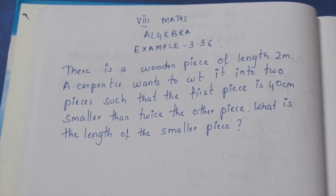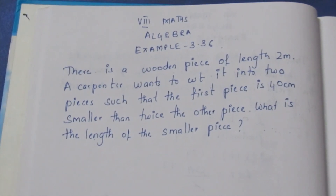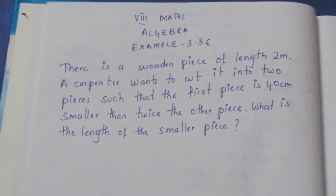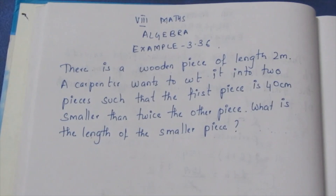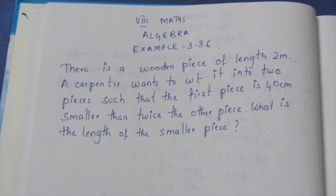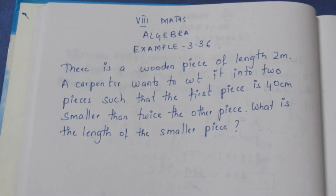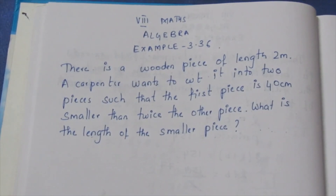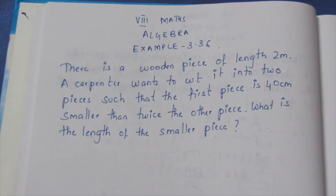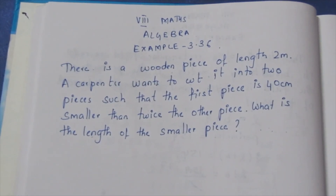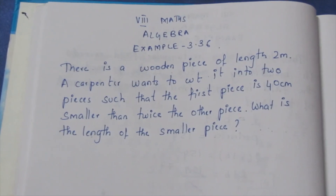Hello viewers, I am Aitli. In the 8th Max Algebra, Example 3.36. Look at the question: there is a wooden piece of length 2m. A carpenter wants to cut it into 2 pieces such that the first piece is 40cm smaller than twice the other piece. What is the length of the smaller piece?